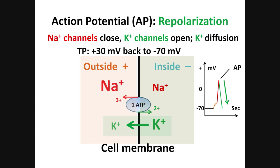The names make sense. First, polarization — the usual state of the membrane, negative inside. Then depolarization — a change from negative to positive. And then repolarization — a change from positive back to negative. This change of the TP from negative to positive and back, shown as the spike on the graph, is the action potential.